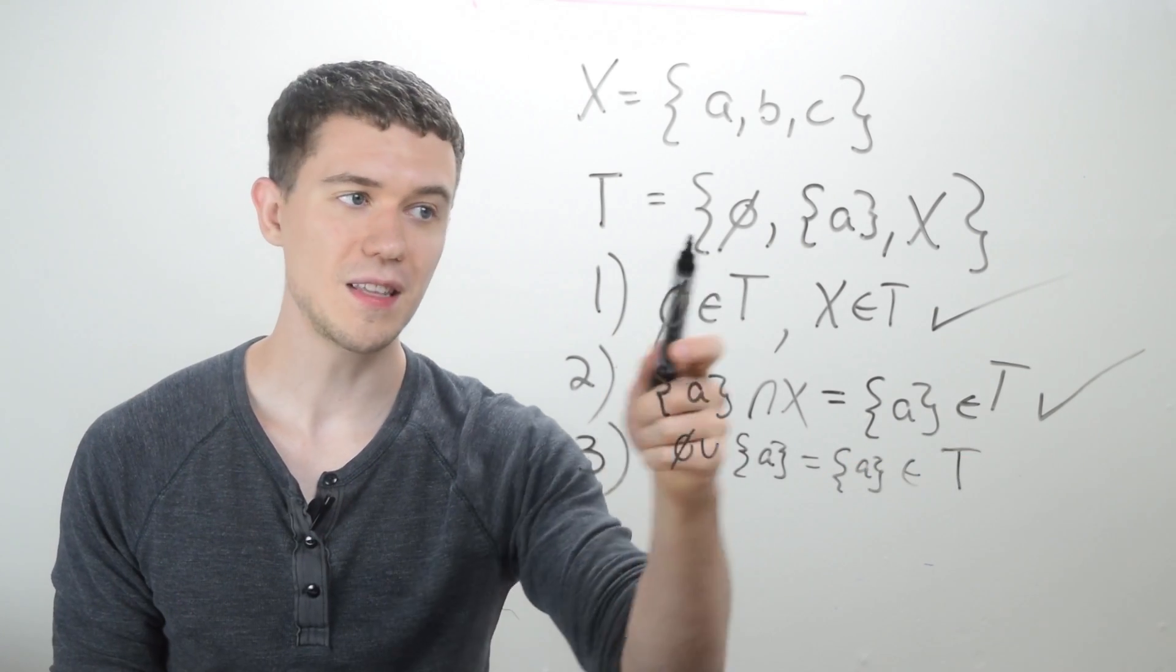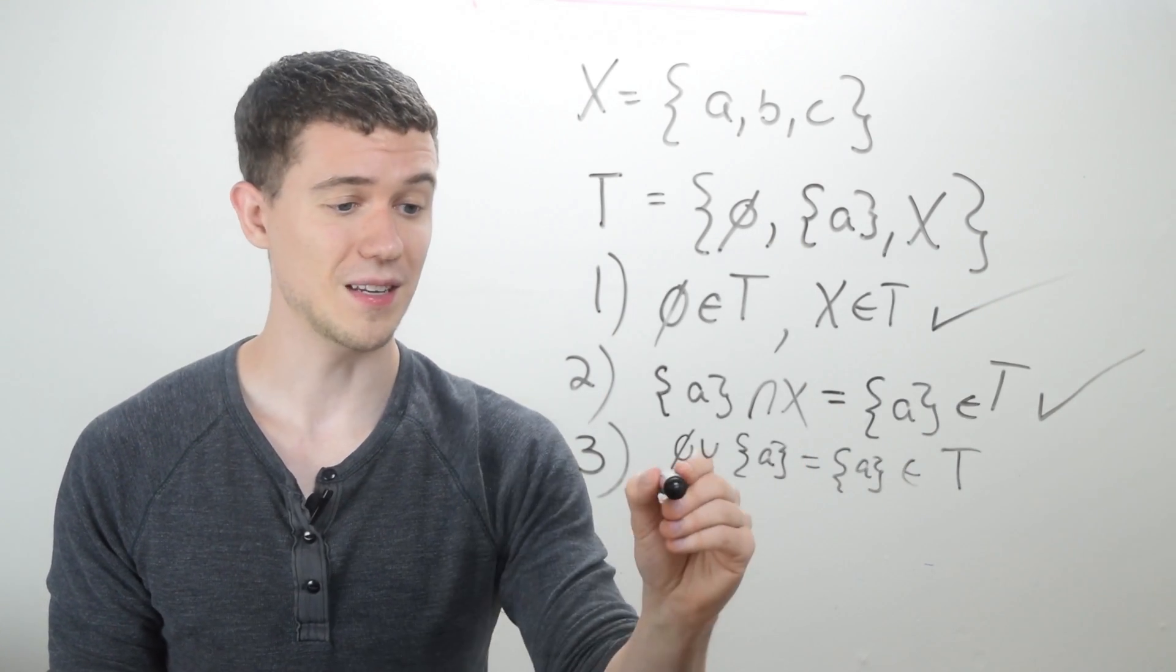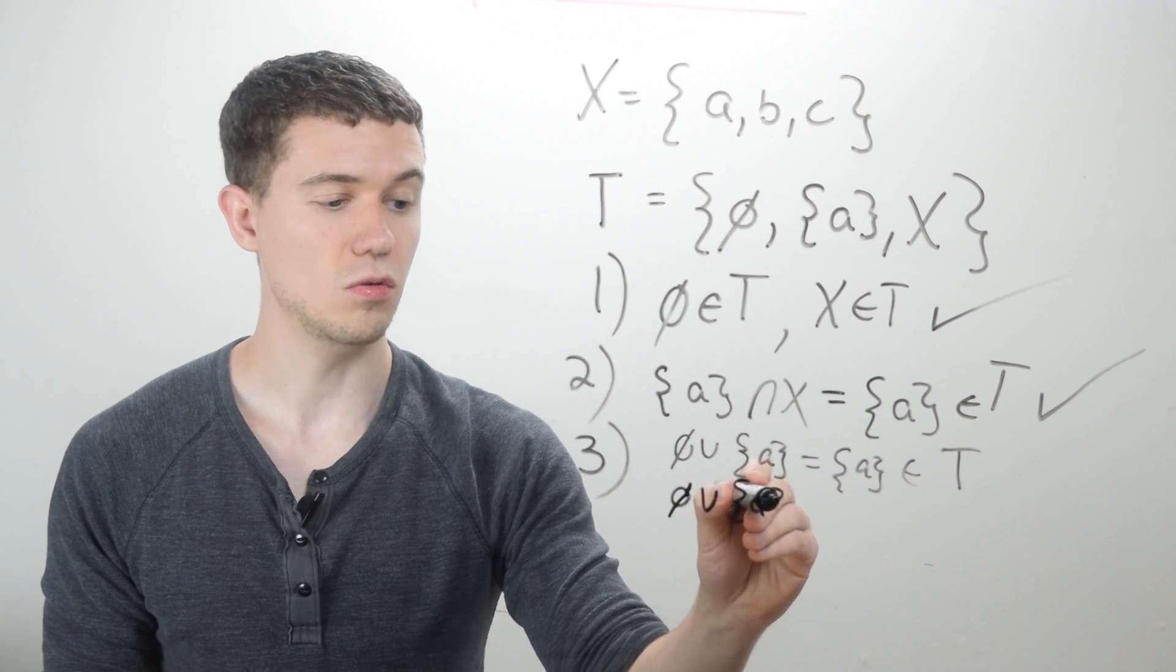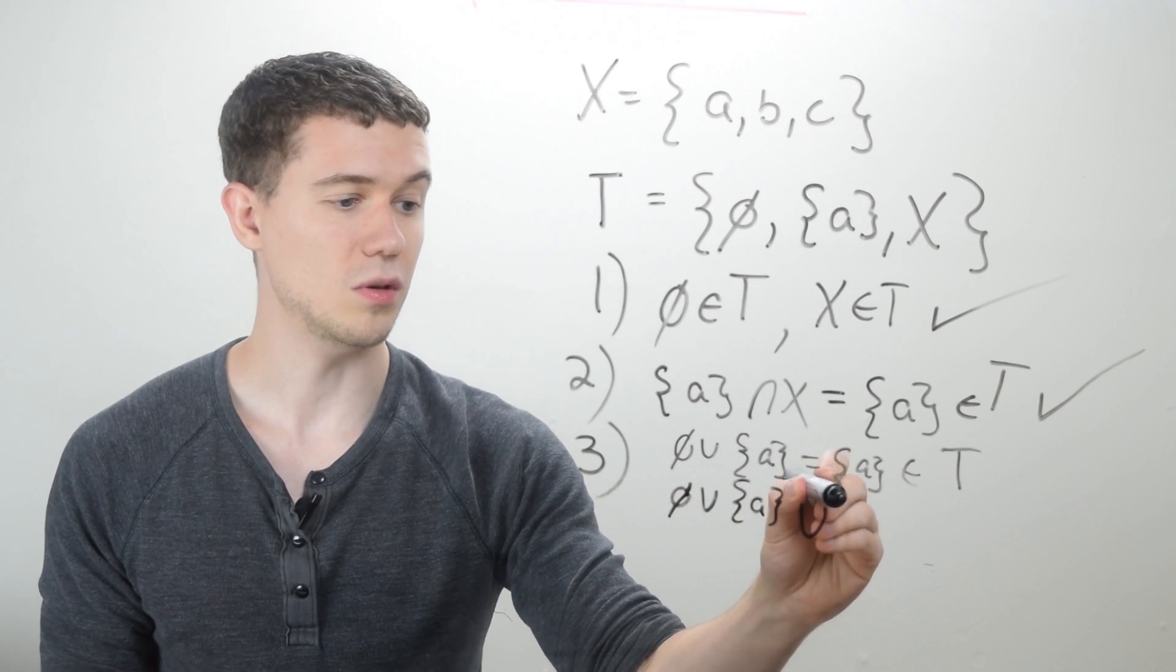What happens if I take the union of all three of these things? The empty set union, the set containing A, union X.